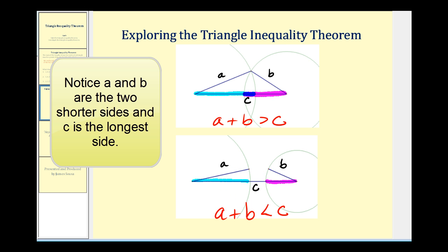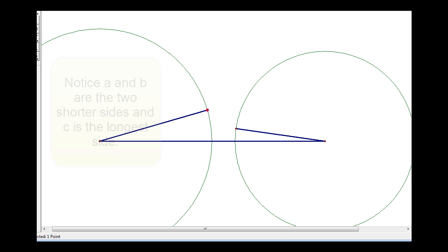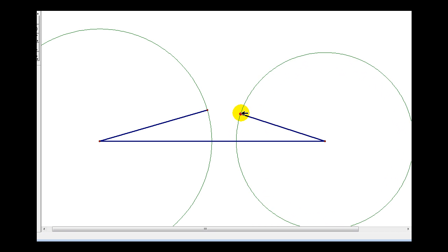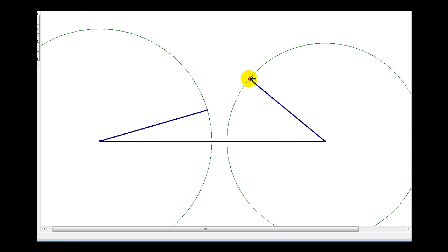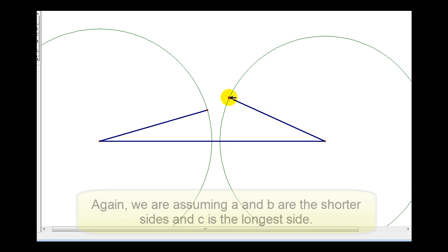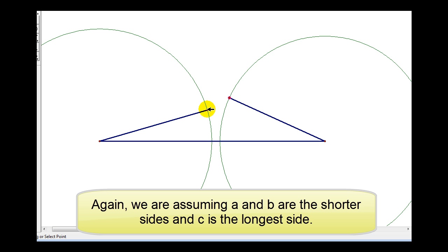To emphasize this even more, let's take a look at an animation. Here we see an example of where A plus B is less than C. And you can see as we change this, we're not able to form a triangle until A plus B is greater than C as we see here.